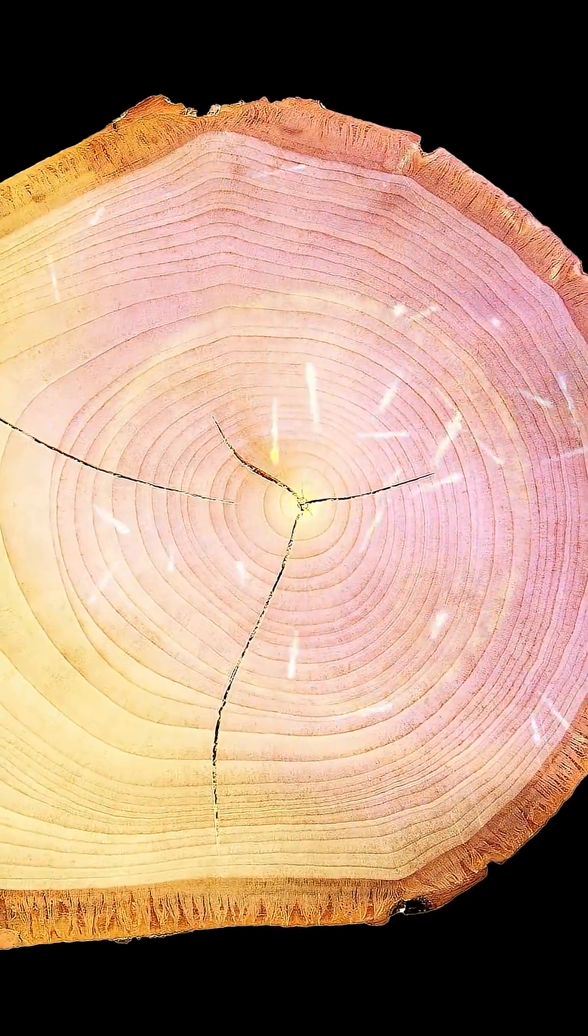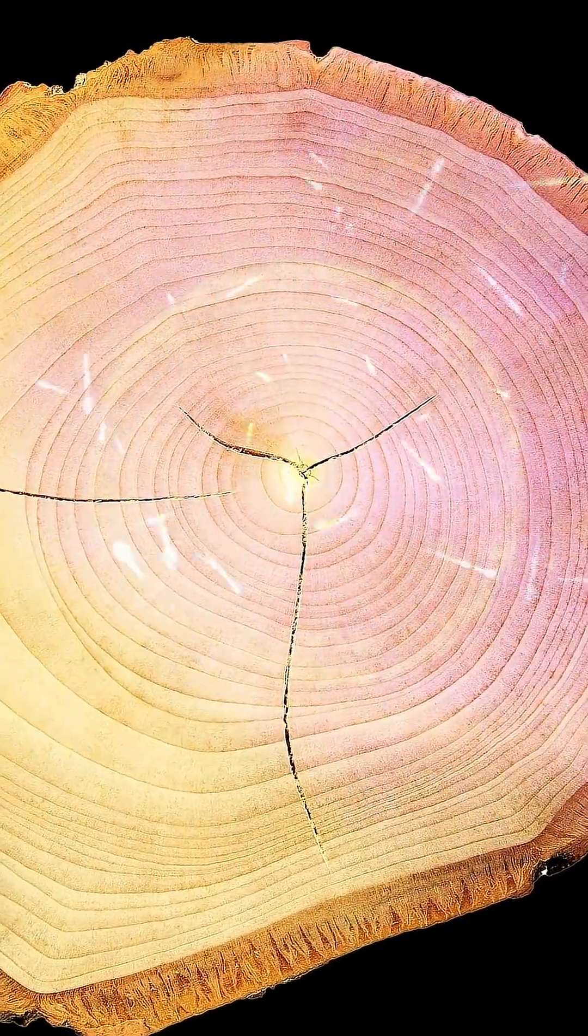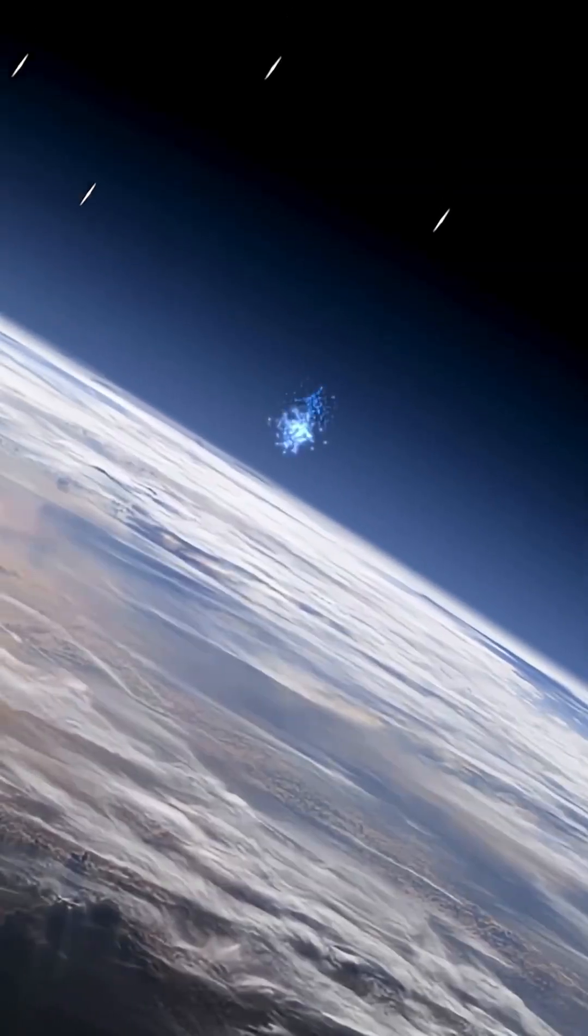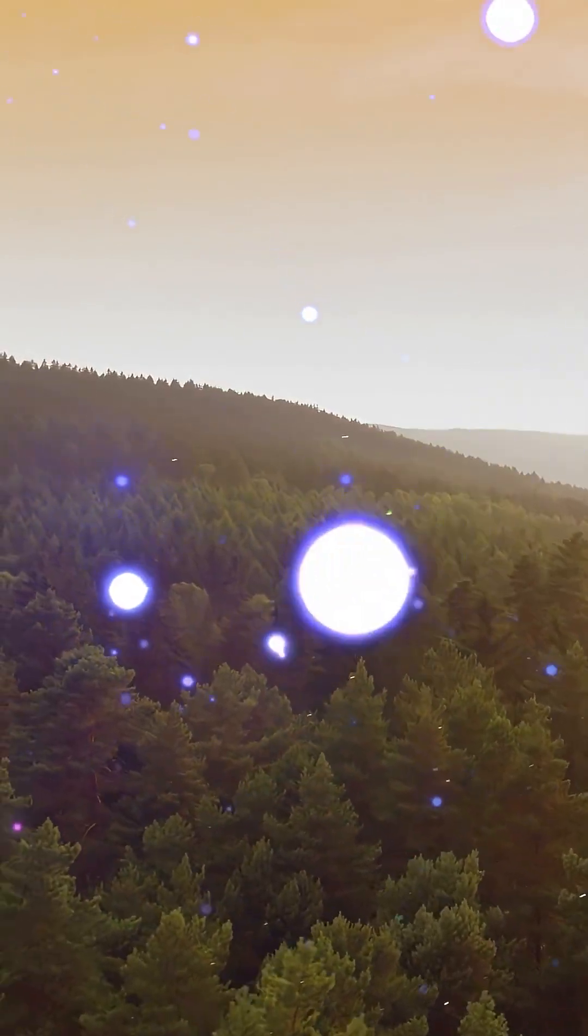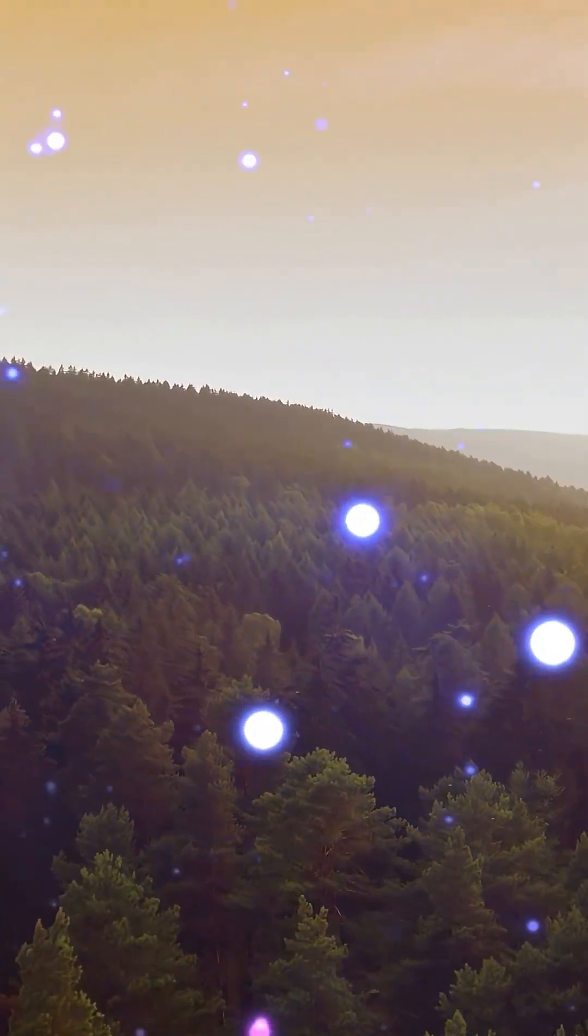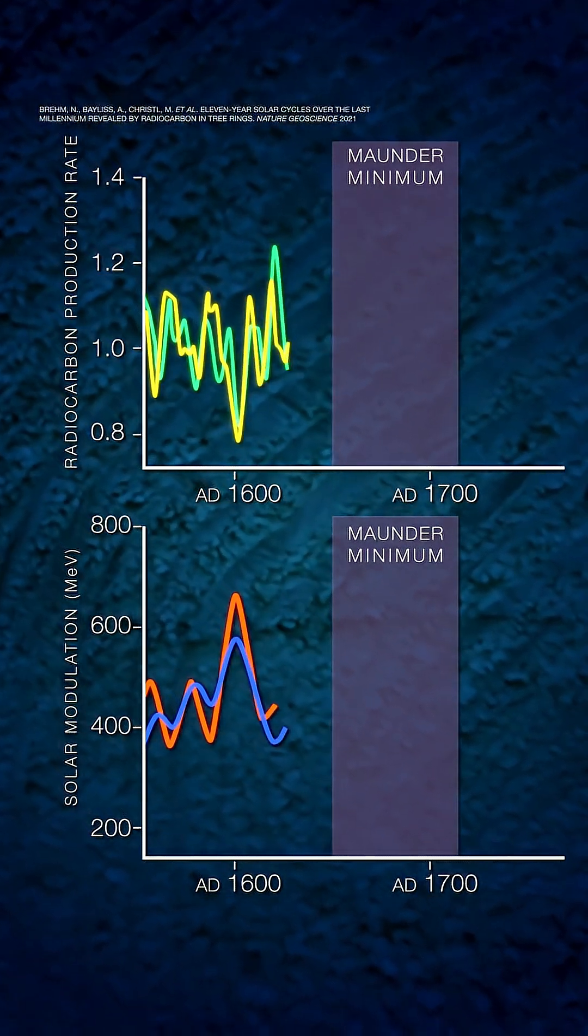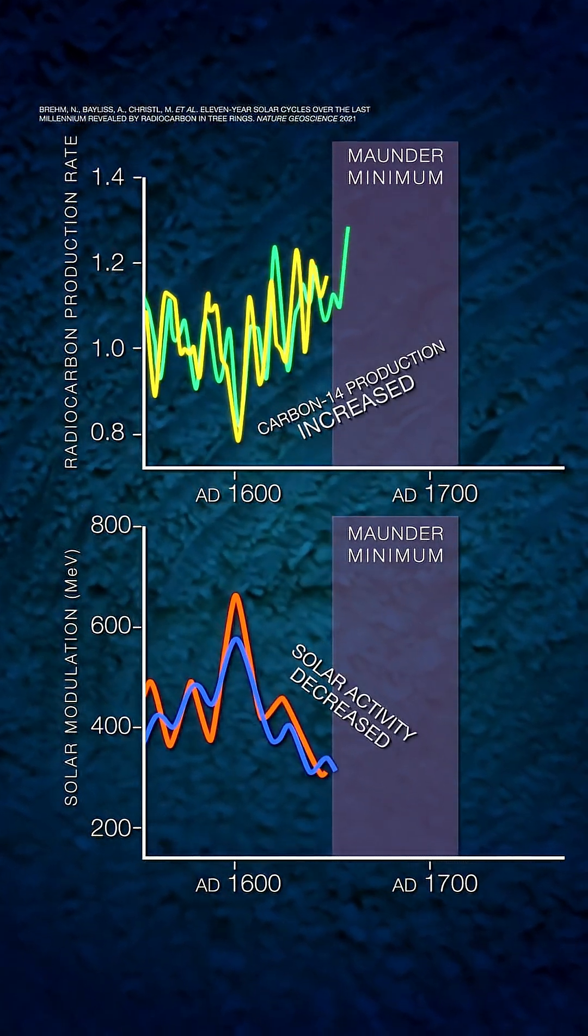Still, some get through, and we can actually see the scars they leave in trees. When cosmic rays collide with Earth's atmosphere, they create rare particles that are eventually metabolized by trees. By studying tree rings, we can identify times when more cosmic rays reached Earth.